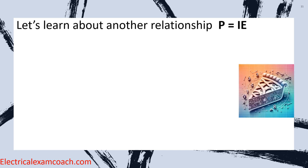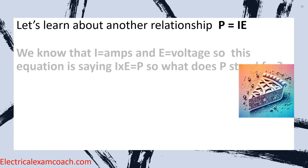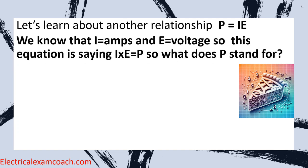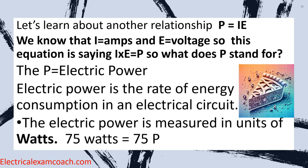Now let's learn about another relationship called PIE. In this equation, I stands for amps and E stands for voltage, and the equation says I times E equals P. P stands for electric power — the rate of energy consumption in an electrical circuit, measured in watts. 75 watts is equivalent to 75P. We set this up just like our previous formula, and just like before, as long as we know two of the three, we can always solve for the unknown.